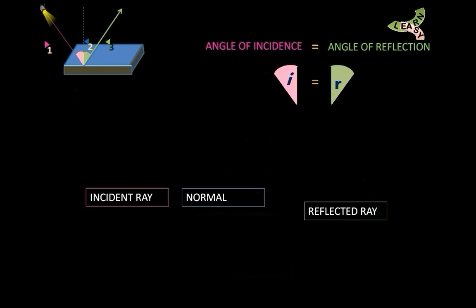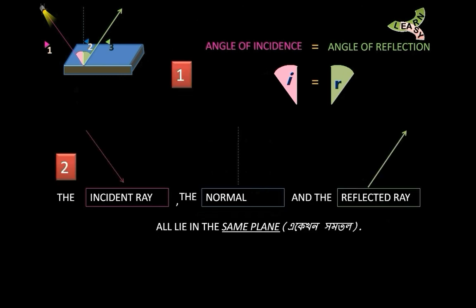The second law states that the incident ray, the normal, and the reflected ray all lie in the same plane.